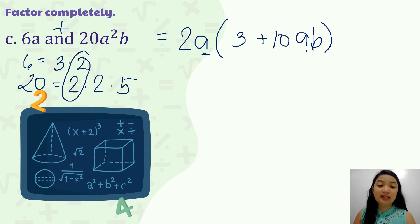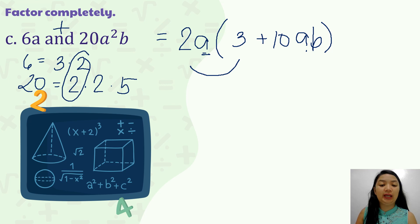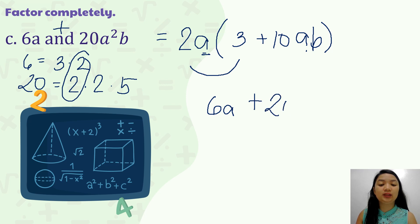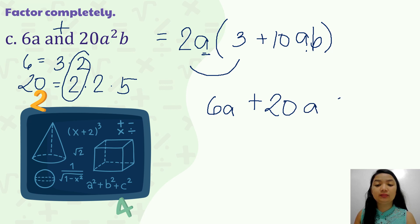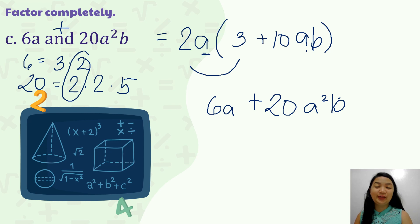We check by multiplying: 2a times 3 gives 6a, and 2a times 10ab gives 20a squared b. We have the correct answer.